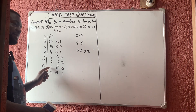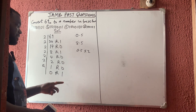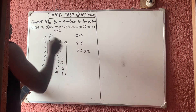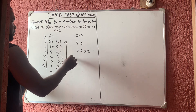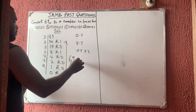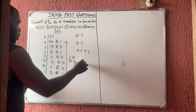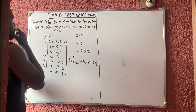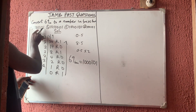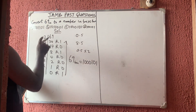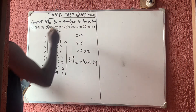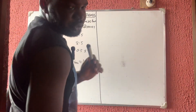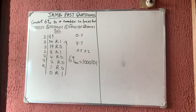Whenever you have 0 as the quotient, that is when you stop. Reading the remainders from bottom to top, 69 in base 10 equals 1000101 in binary. So option C is correct. Thank you very much, bye bye.